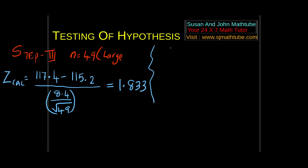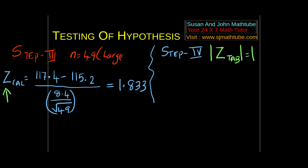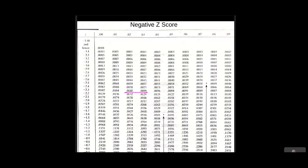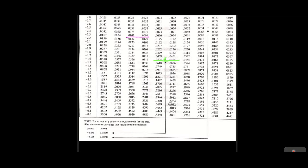Step number 4: tabulated value. What did you calculate? Z. So what will you tabulate? Z. The format is |z_α|. Since it is not two-tailed, it's z(0.05). 0.05 is a standard value — follow the arrow in the table. The answer is 1.645.